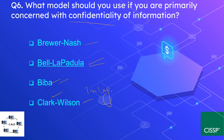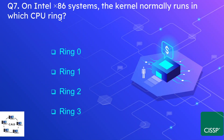Question number seven: on an Intel x86 system, the kernel normally runs in which CPU ring? The options are ring 0, ring 1, ring 2, or ring 3. The correct answer is ring 0. The kernel usually lies in ring 0, which is the closest ring to the hardware.